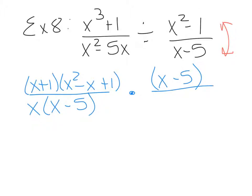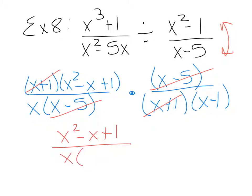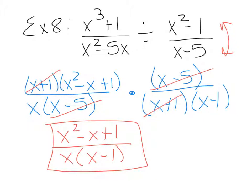x squared minus 1 is the difference of squares, factoring to x plus 1, x minus 1. Now we can cancel. The x minus 5s cancel vertically, and x plus 1s cancel diagonally. You cannot cancel the individual x term since it's part of a trinomial. Across the numerator we have x squared minus x plus 1, and across the denominator we have x times x minus 1. I prefer a factored answer, but that depends on what your teacher prefers.